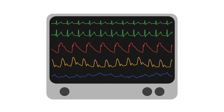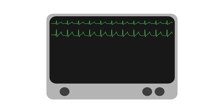Let's see if you can identify the following waveforms from an ICU patient monitor. As I ask you questions, take a moment to pause the video and give yourself a chance to answer. Starting at the top, we see two green waveforms. Those should be familiar as ECG leads, showing us heart rate and rhythm.